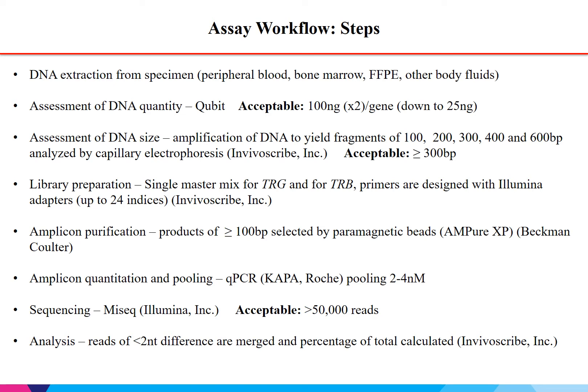The assay workflow has a number of steps, starting with DNA extraction from the respective specimen type. We undergo two different steps of assessment of the DNA: quantity by Qubit, and quality by PCR of different fragment sizes up to 600 base pairs, with PCR products analysed by capillary electrophoresis. The acceptable size for DNA to move forward has to be a minimum of 300 base pairs. Our preferred input DNA is 100 nanograms, but it can go down to 25 nanograms. The first step is library preparation, with a single master mix for TRG and another for TRB, where the primers are designed with Illumina adapters up to 24 indices, based on a kit manufactured by InVivoScribe.